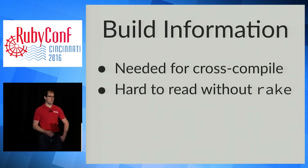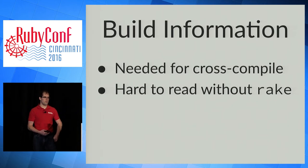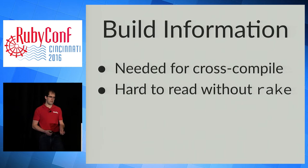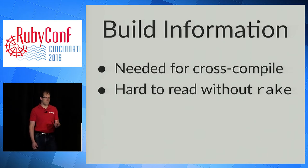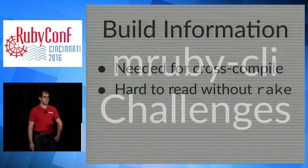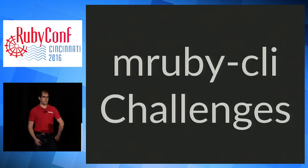The last challenge I'll cover for MRuby is getting build information out of MRuby. Since MRuby is compiled, it needs to link in C libraries to compile successfully. With MRuby CLI you're also cross-compiling these C libraries to many different platforms, so you need to use the correct cross-compiler. Unfortunately, it's hard to extract the cross-compiler information out of the MRuby build system without loading all of its rake files, which is pretty slow. I think improving this will make MRuby's build system more flexible. MRuby CLI, like MRuby, was a new tool for me, so it took some time to learn to use it correctly.